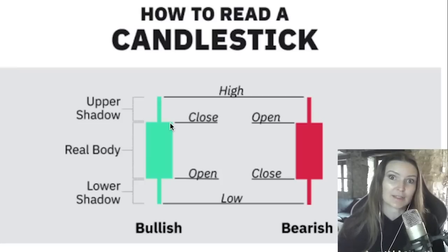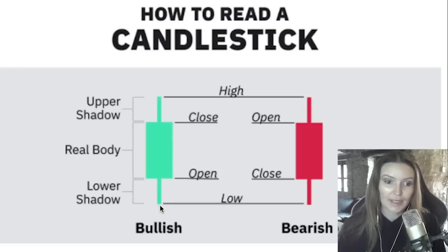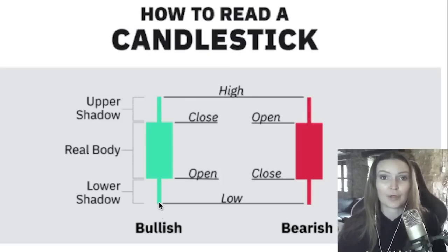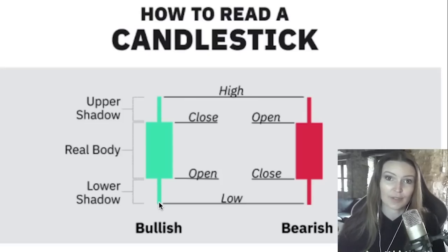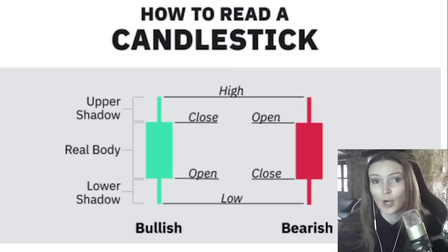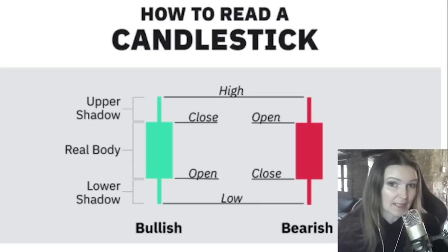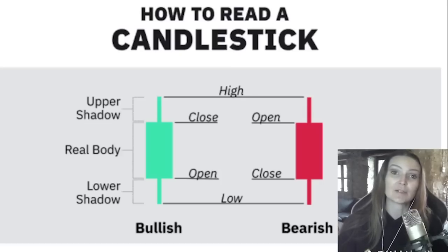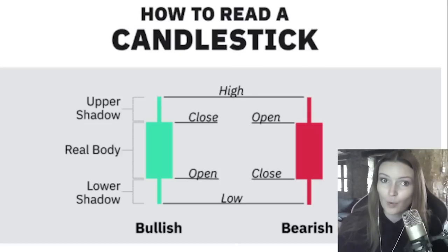The body of the candlestick is known as the real body. The lines above and below the candlestick are known as the upper shadow and the lower shadow, but can also be referred to as the tails, the wicks, or the shadows of the candle. Imagine if a candlestick just showed us the opening and closing amount — it wouldn't be a good representation of the trading that occurred within the time period. So adding wicks to the candle helps us understand more of the story.